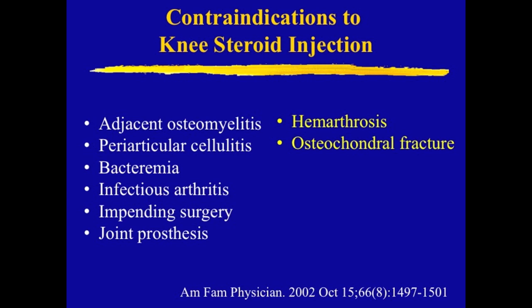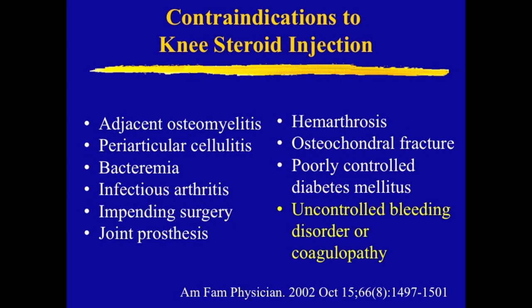Hemarthrosis and osteochondral fracture may indicate trauma-induced pain, which is not an indication for steroid injection. Poorly controlled diabetes mellitus may increase the risk of infection, and glucose control may be acutely worsened by a cortisone injection — we typically do not inject patients with an A1C over 9. We often inject patients on Coumadin, since knee steroid injections are a nice alternative for arthritis patients who cannot tolerate NSAIDs, but an uncontrolled coagulopathy may increase the risk of hemarthrosis. We do not inject patients with an INR greater than 4.